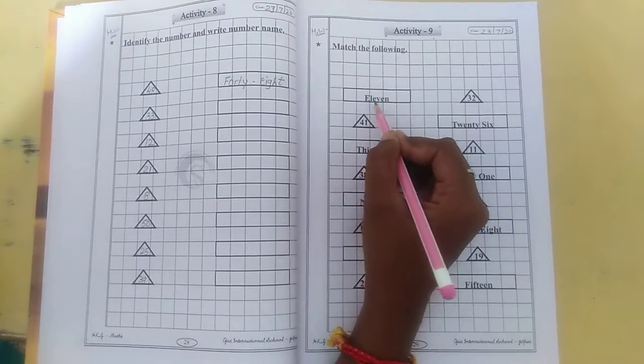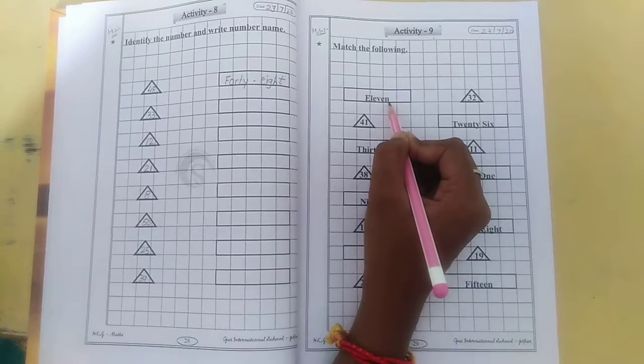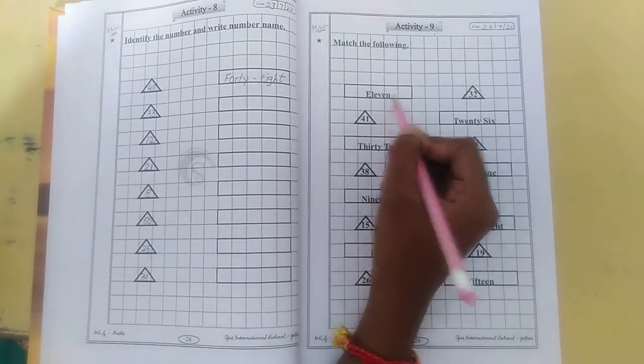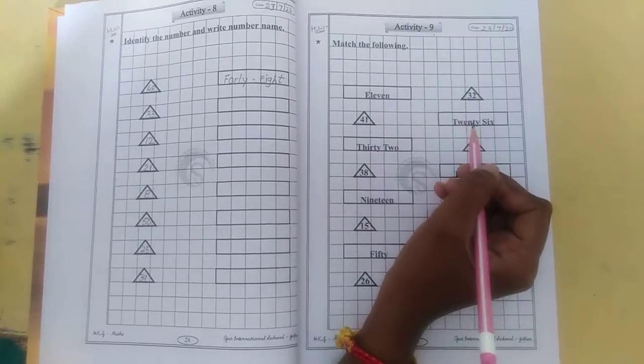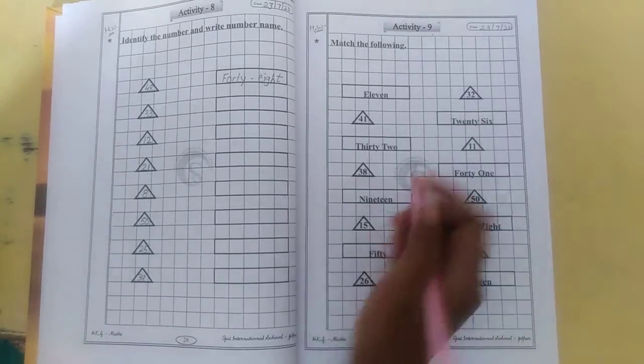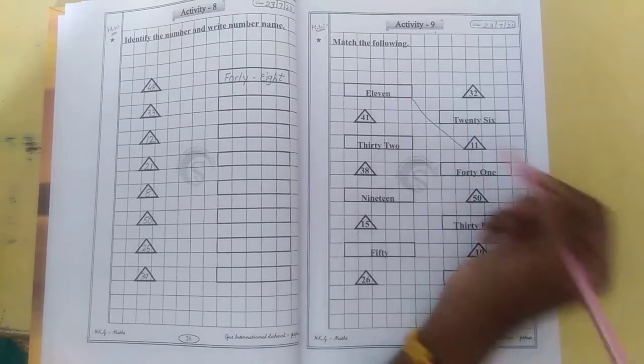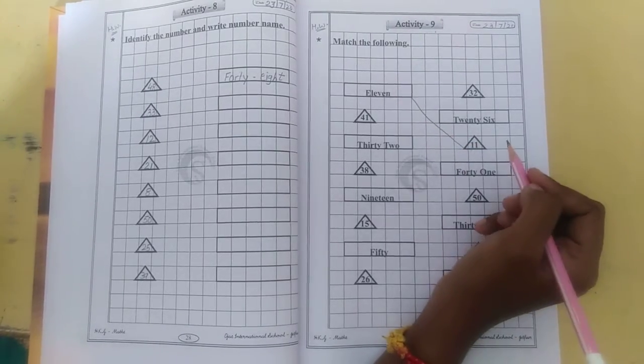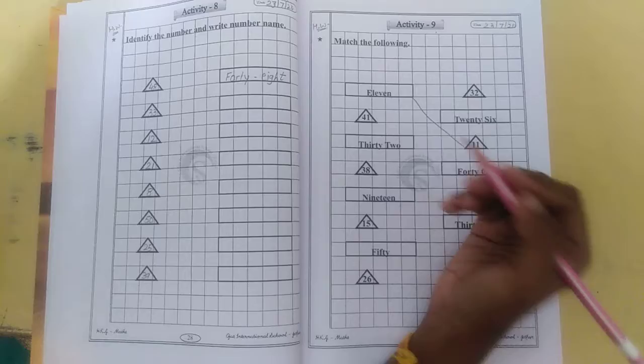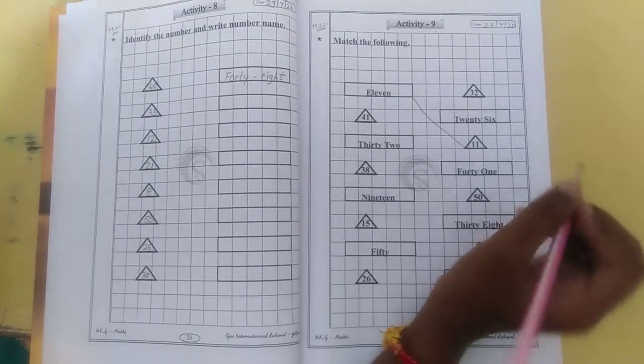So what you have to do? Just read the number name first. E-L-E-V-E-N. It means 11. So you have to find the number 11 from this arm. Where it is? Here. So you have to match it properly. So this way you have to read the number or number name and match with its correct number.